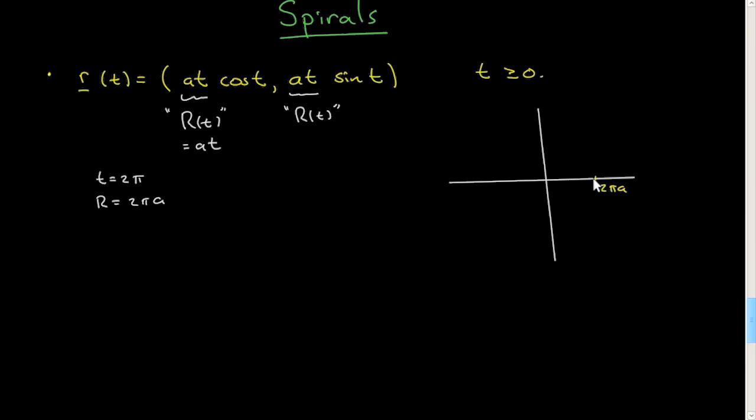Let's just assume that this radius was constant. Then I would increase t by two pi, go from two pi to four pi, and if radius were constant I would simply trace out a circle. But in fact what's going to happen is this radius is going to increase, and the radius is going to increase from two pi a to four pi a.